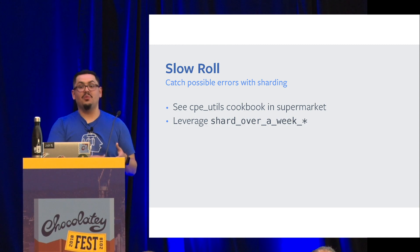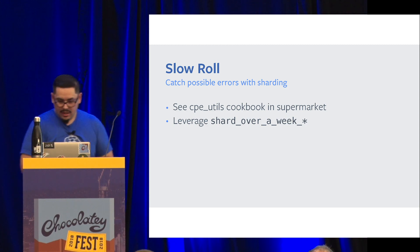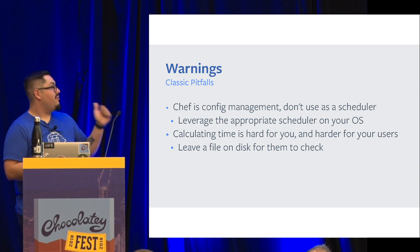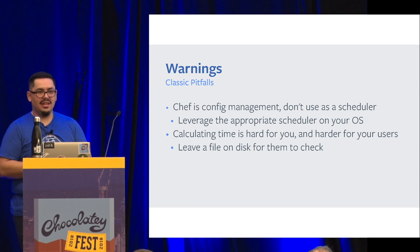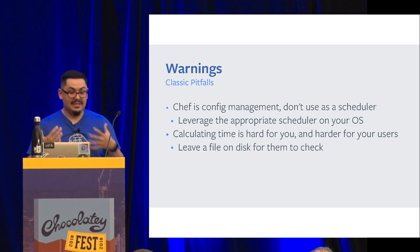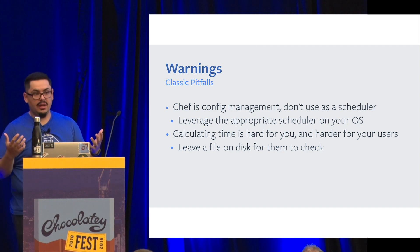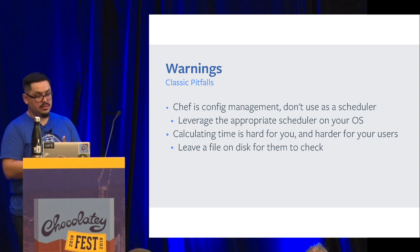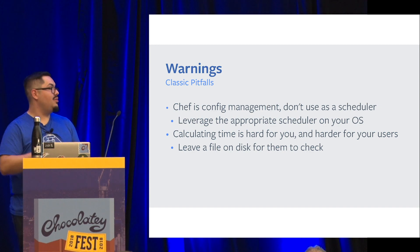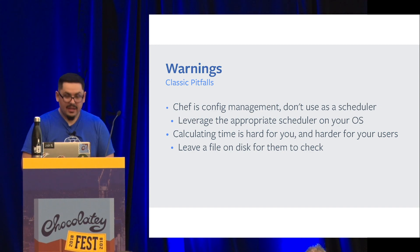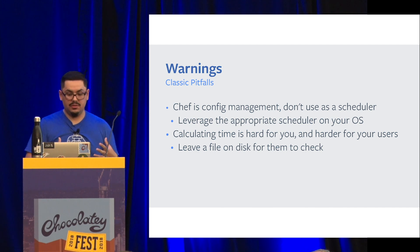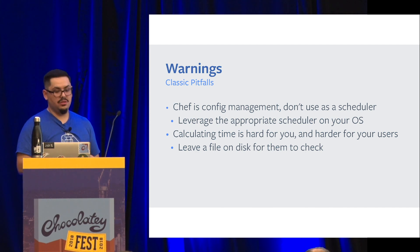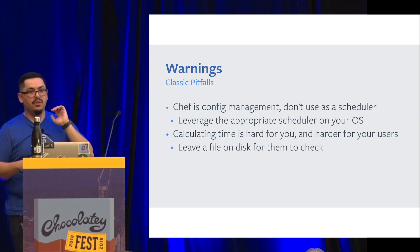I want to give a couple of warnings. Chef is a config management tool — do not leverage it as a scheduler. I see this all the time. People want Chef to be a scheduler; it isn't. Your OS probably has a good scheduler — you have Windows Tasks and you have Cron. Those are great tools that you can leverage to call all the scripts or tools that you dropped. Calculating time is really difficult — it's hard for you, it's harder for your users. Check that file on disk, have them verify. Even before you consider rolling out, have them go and set their settings and double-check that.